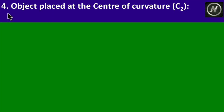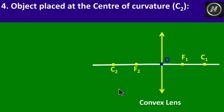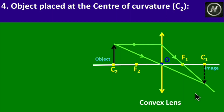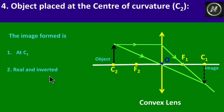Case 4: Object placed at the center of curvature C2. Rays from the object parallel to the principal axis pass through the focus after refraction, and another ray through the optical center intersects to form the image at C1. The image formed at C1 is real and inverted, and the same size as the object.